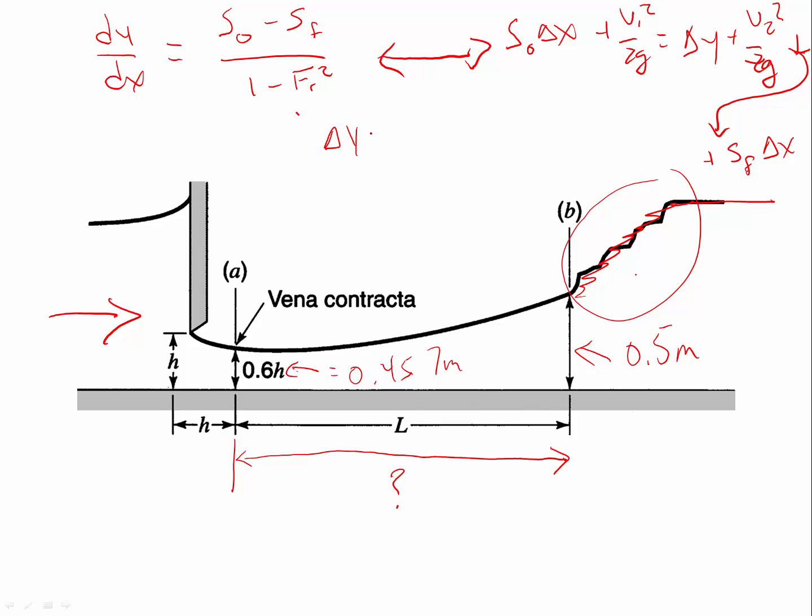So I'm going to use that form of the gradually varying flow equation to solve this problem. We're going to remember that we've got delta y equals y2 minus y1, and we're going to obviously look for the solution as this is delta x. I'm going to move to the next slide where we have some more room here.